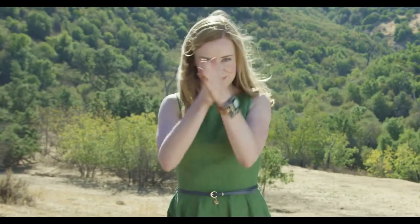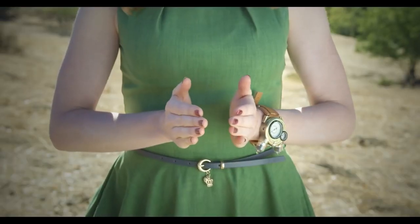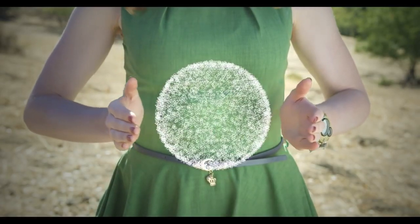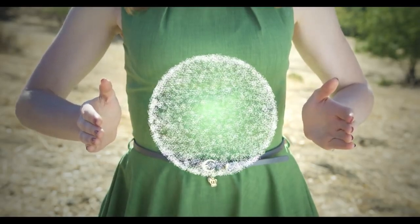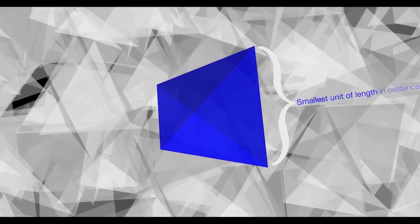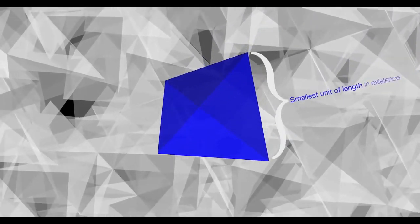And from this 4D quasi-crystal, they derive a 3D quasi-crystal, which they believe is the fundamental substructure of all of reality. This 3D quasi-crystal has a fundamental building block — a tetrahedron — which is a three-dimensional equilateral triangle. The size of each edge on this shape is the smallest possible length that can exist.